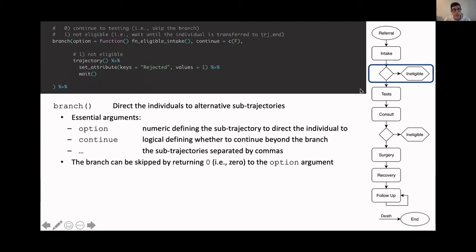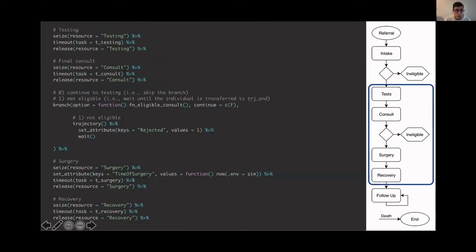One very useful feature is that if option is zero, then you actually skip the branch. In this case, we want individuals that are eligible, which we'd check with this function that we've defined. It's very simple, just sample zero or one. Those will continue to test. But those who are not eligible, they will go to sub-trajectory one. So they will end up here. And again, we then sort of save that the individual was rejected for administration purposes. And we wait. Basically, we sort of hold the individual there until the renege in function has triggered the event of death.